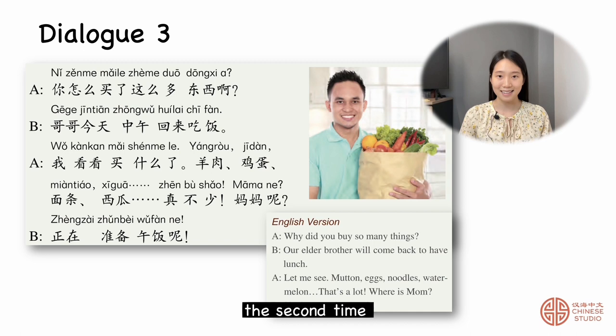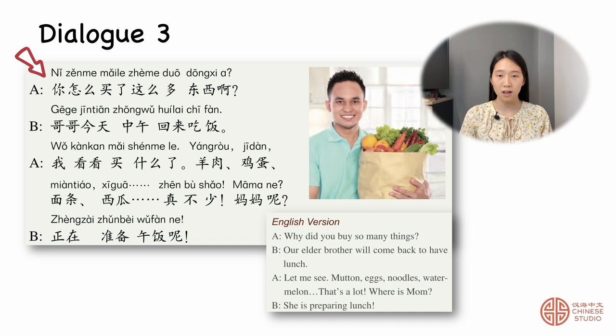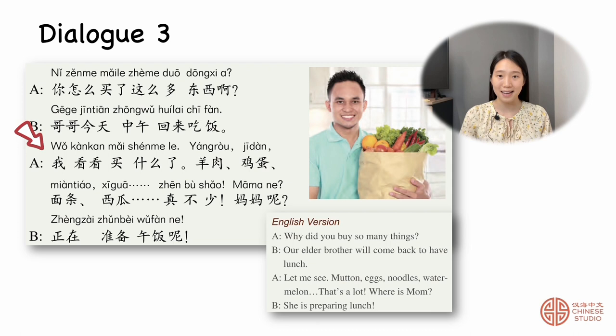The second time, please repeat after me. 你怎么买这么多东西呀？哥哥今天中午回来吃饭。我看看买什么了。羊肉、鸡蛋、面条、西瓜。真不少。妈妈呢？正在准备午饭呢。